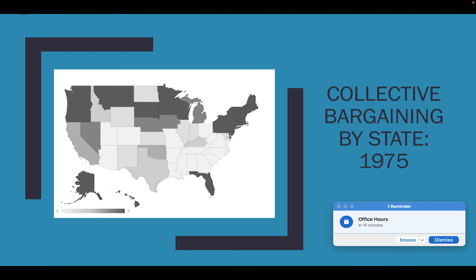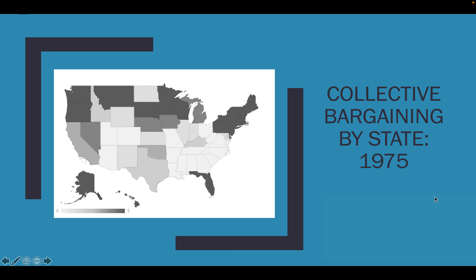By 1975, collective bargaining rights had really spread throughout the country — the Northeast especially. The map shows five different groups. The darkest areas have collective bargaining rights for police, fire, teachers, state employees, and other local government employees. Lighter areas show no collective bargaining rights. The Northeast is totally covered, along with a lot of the Midwest and out West, and you see lighter areas down South.